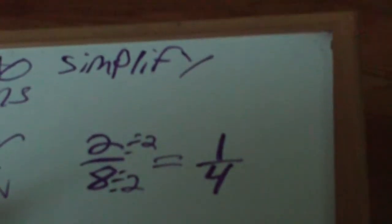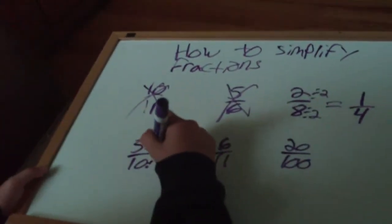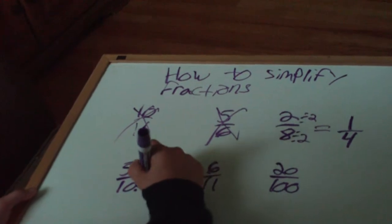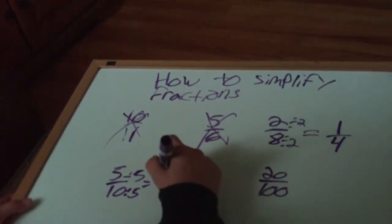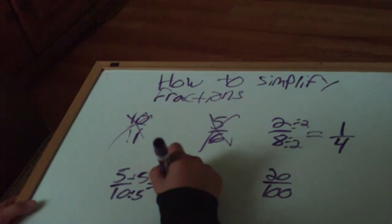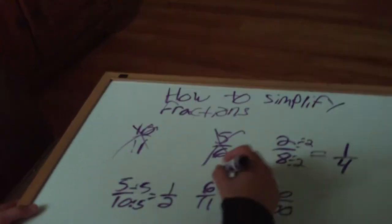5/10, same thing. This is like a half. 5 divided by 5 – you've got to do the top, you've got to do the bottom. 5 divided by 5 is 1, 10 divided by 5 is 2. It's 1 half.